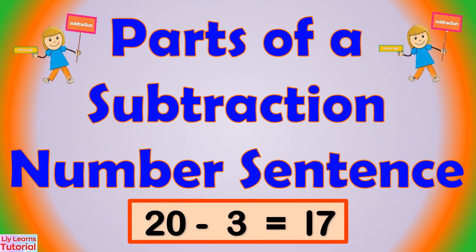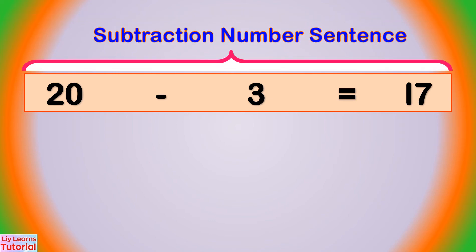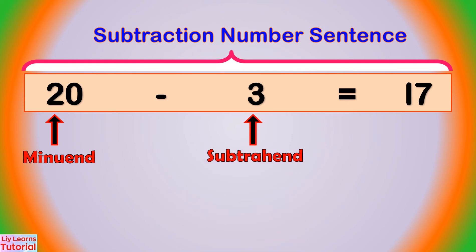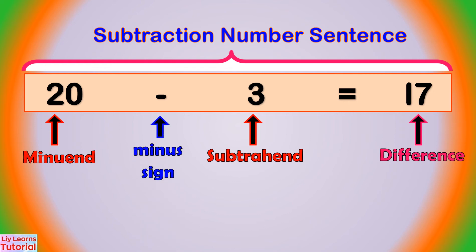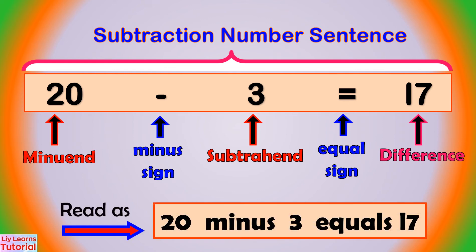Let's look at the parts of a subtraction number sentence. This is a subtraction number sentence: 20 is the minuend, 3 is the subtrahend, 17 is the difference. This is a minus sign and this is an equal sign. We can read this as 20 minus 3 equals 17.